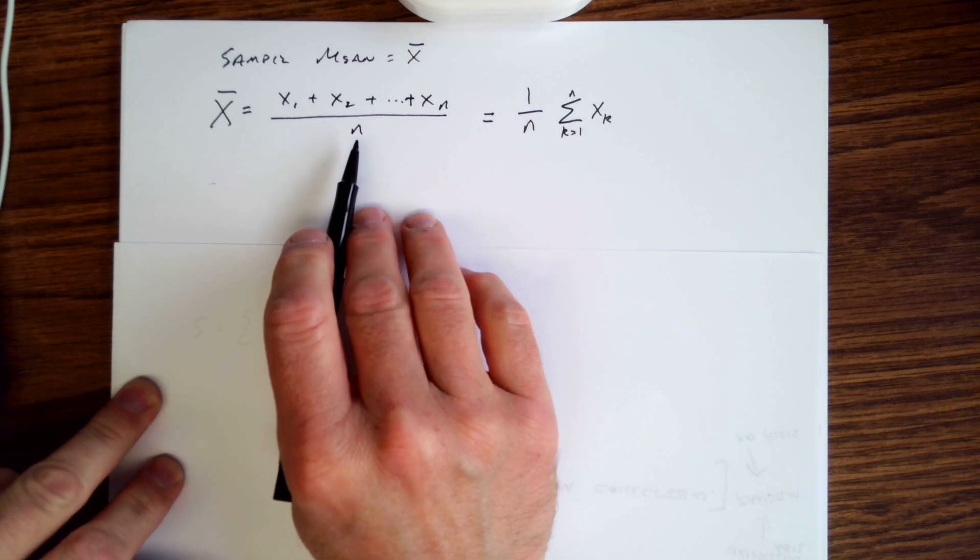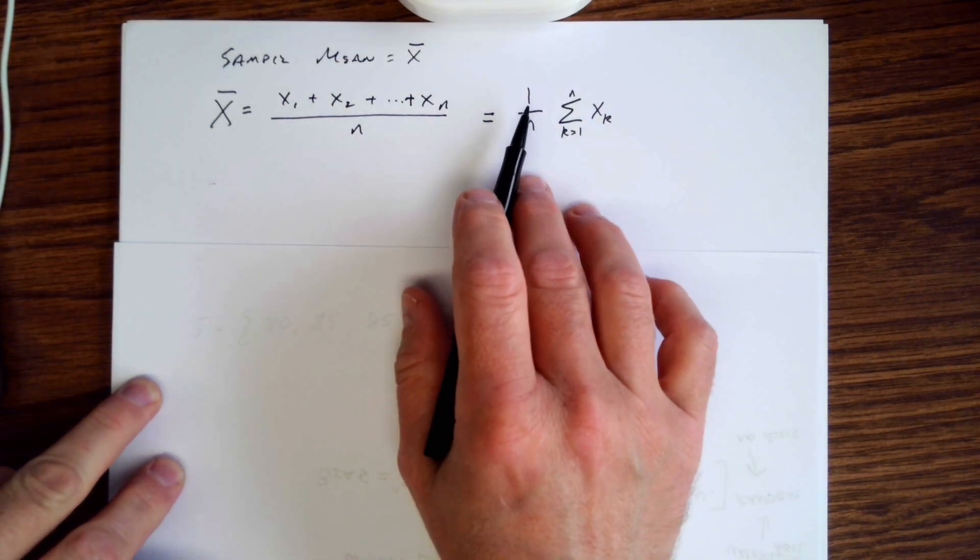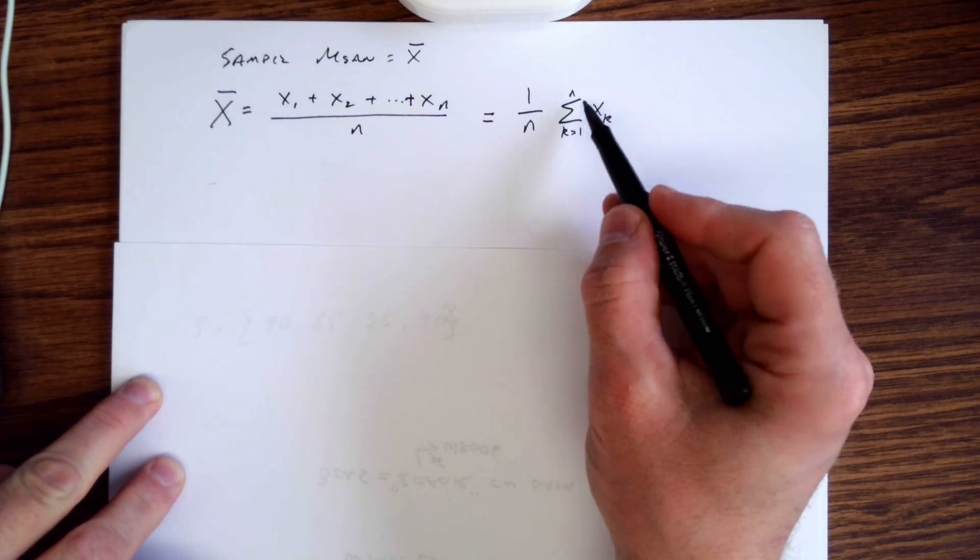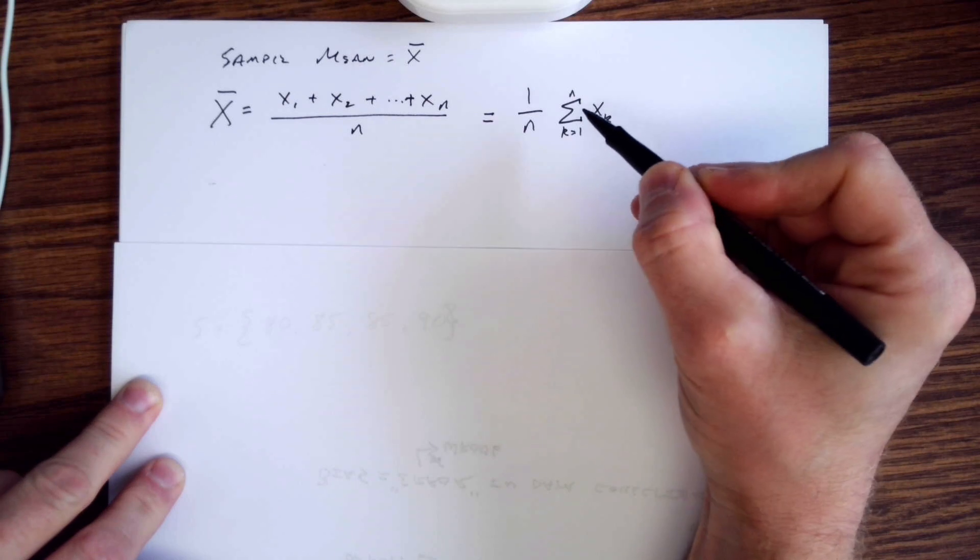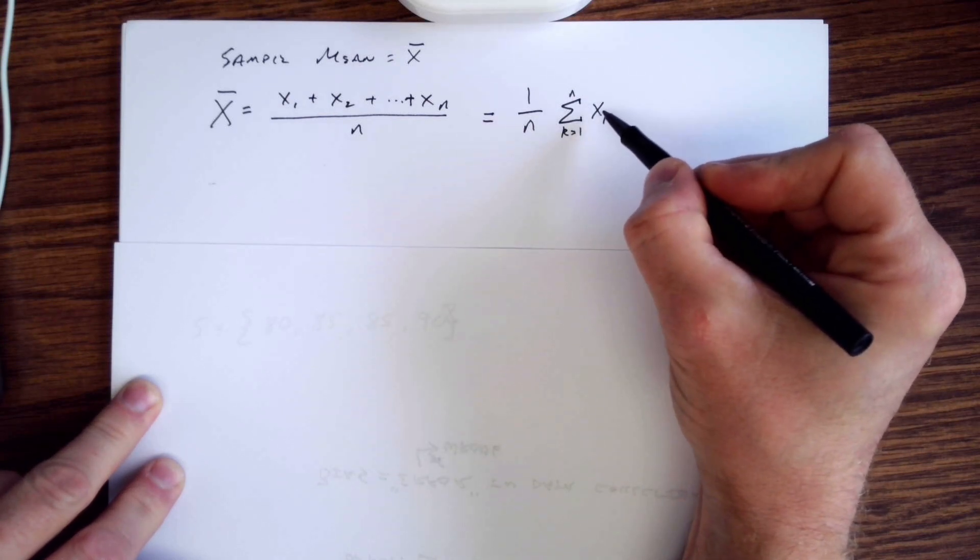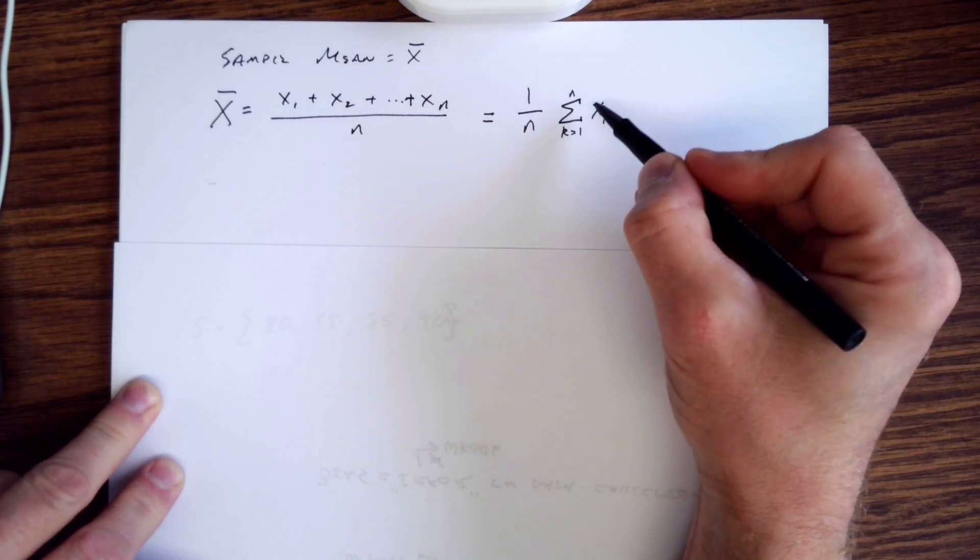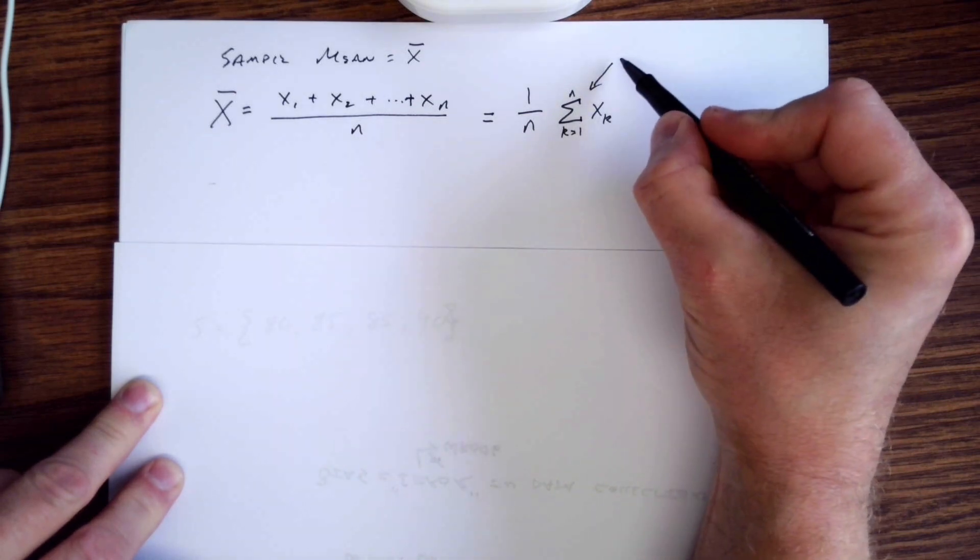Another way to write this is 1 over n times the summation. That E looking symbol is actually the Greek symbol sigma, and you're doing sigma of all the x values, so you're summing up those pieces. This means this is a mathematical symbol for sum up those pieces right there.